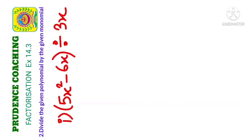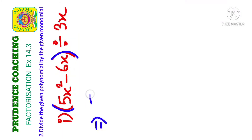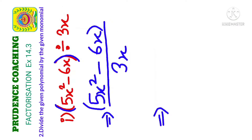Let's start with sum number 21. We have been given a polynomial that is 5x² minus 6x. This is a polynomial because it has more than one term — 5x² is one term and 6x is another term. We are going to divide it by 3x. Whatever you have before the division sign, you write in the numerator as the dividend, and 3x goes in the denominator.